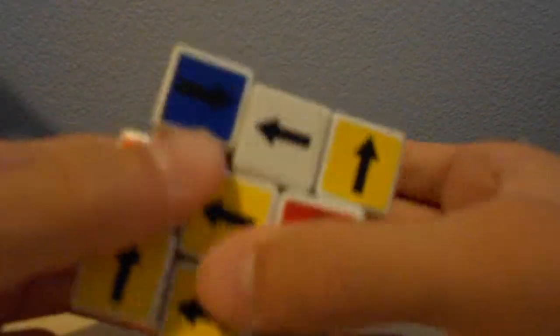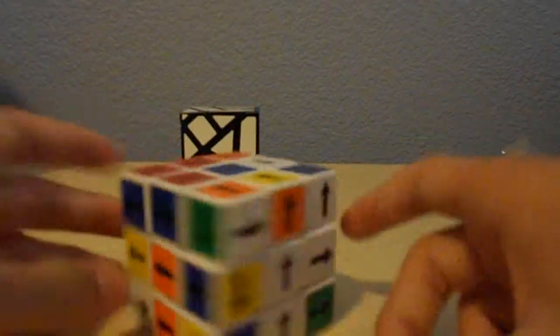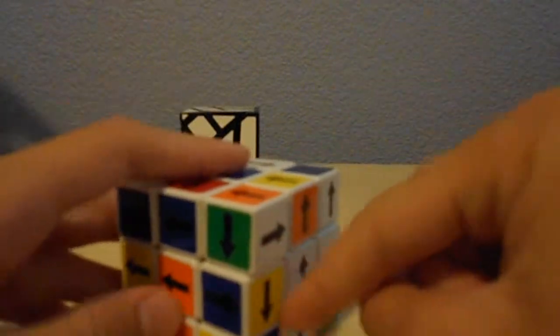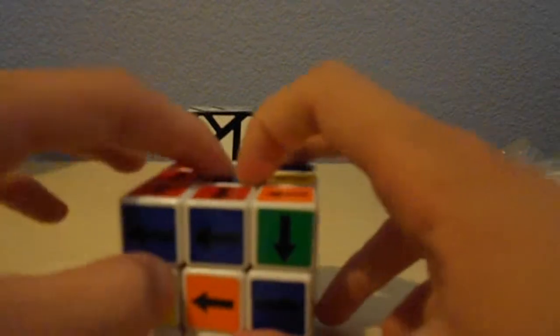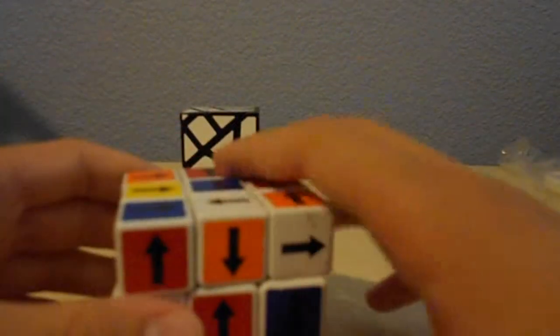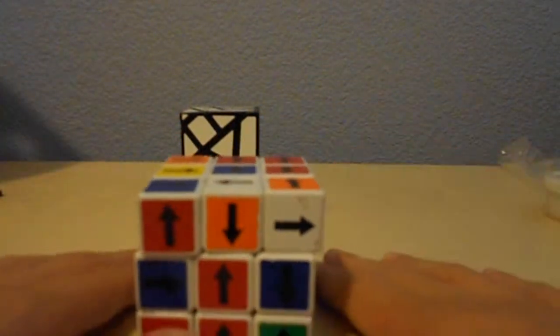You've got to do steps 2 to 4 on the beginner's method. Just a note is you can use Friedrich method to put the F2L pairs in, but you're going to have to use the beginner's method for the last layer. I'll get back to that.